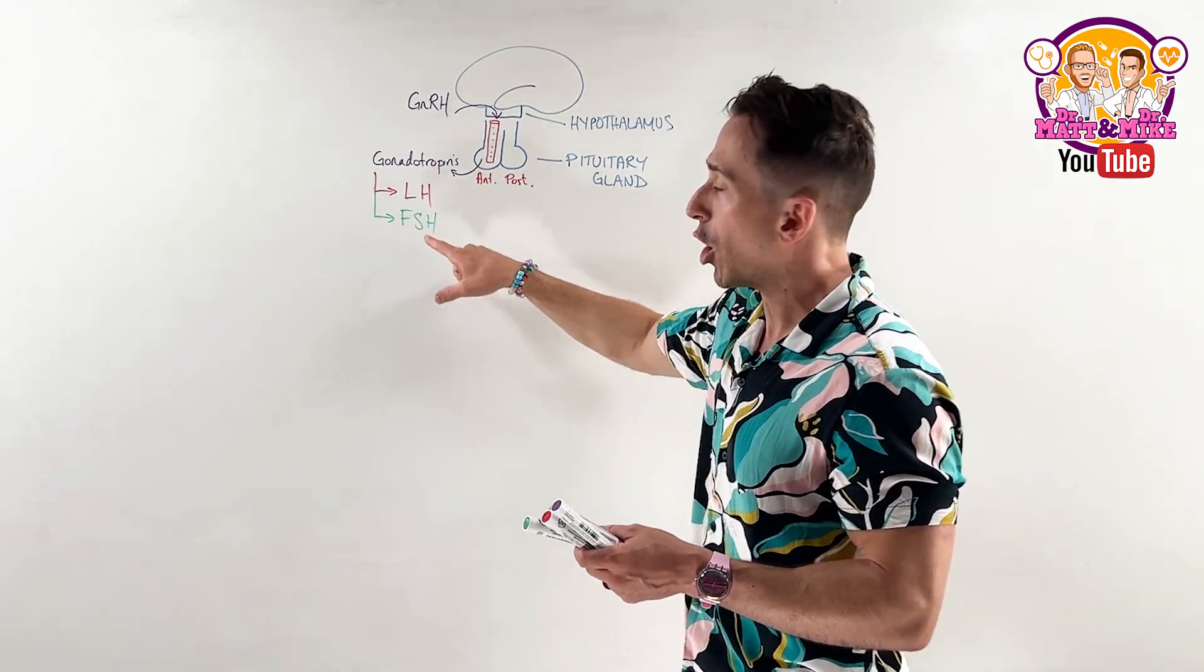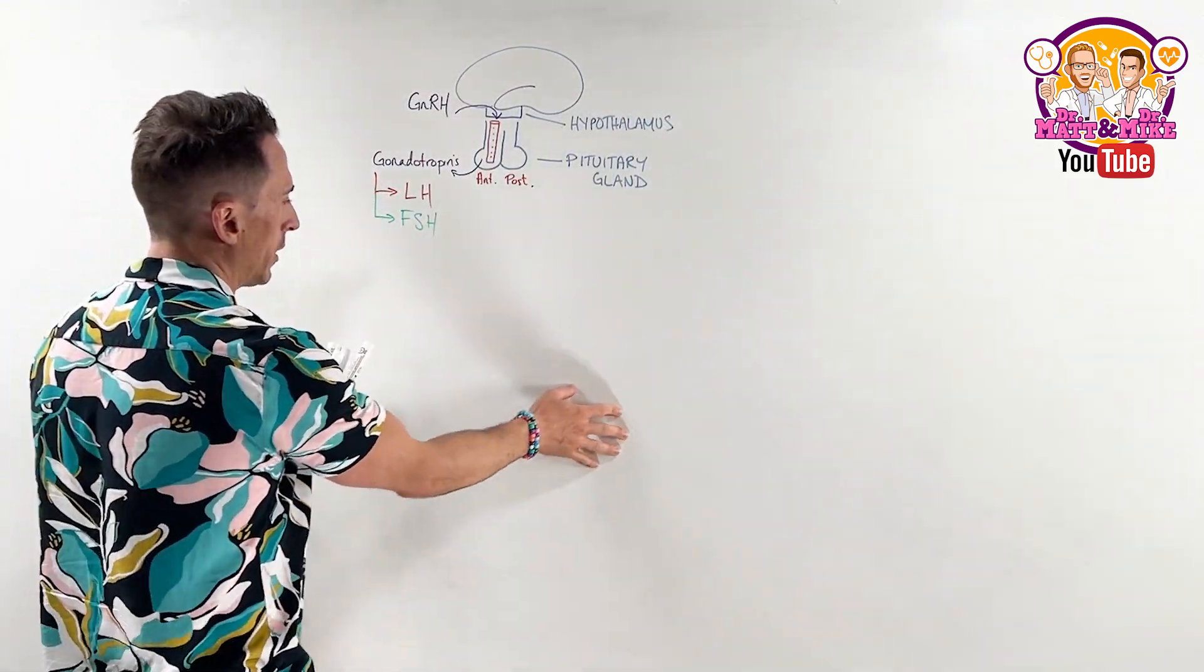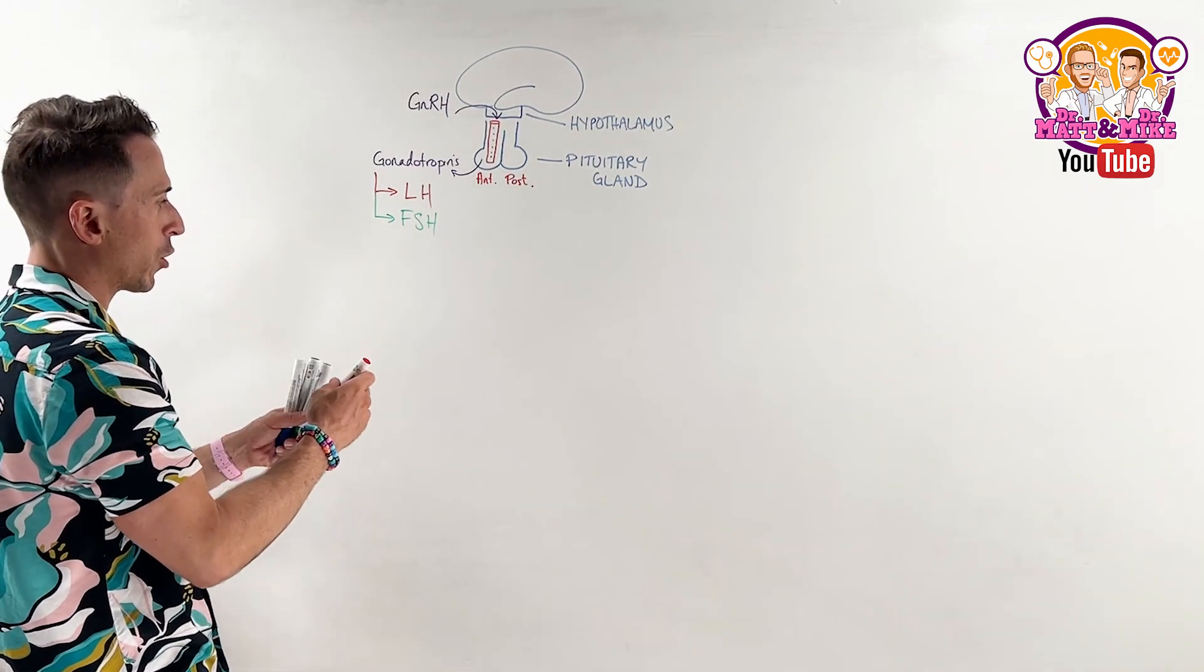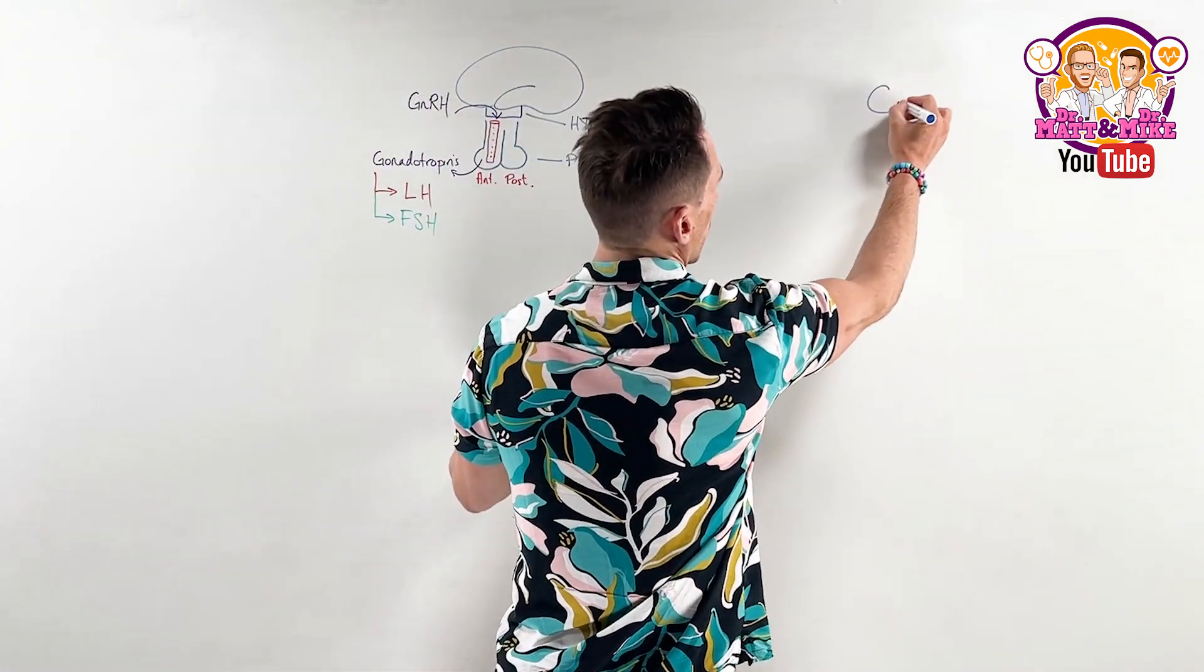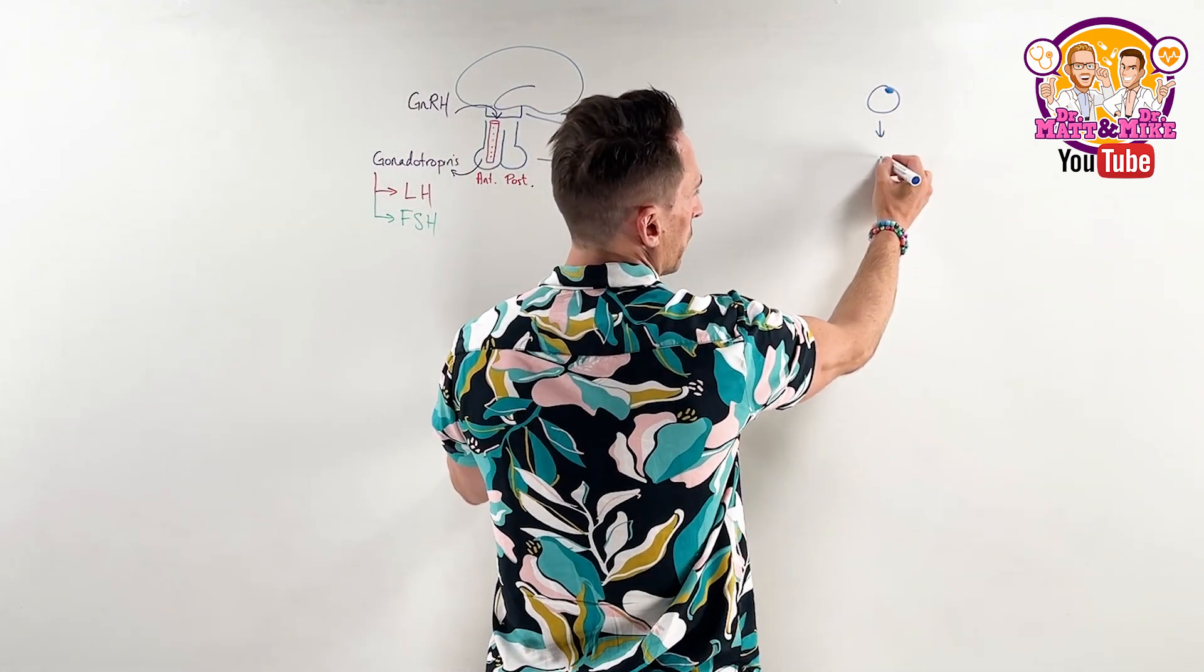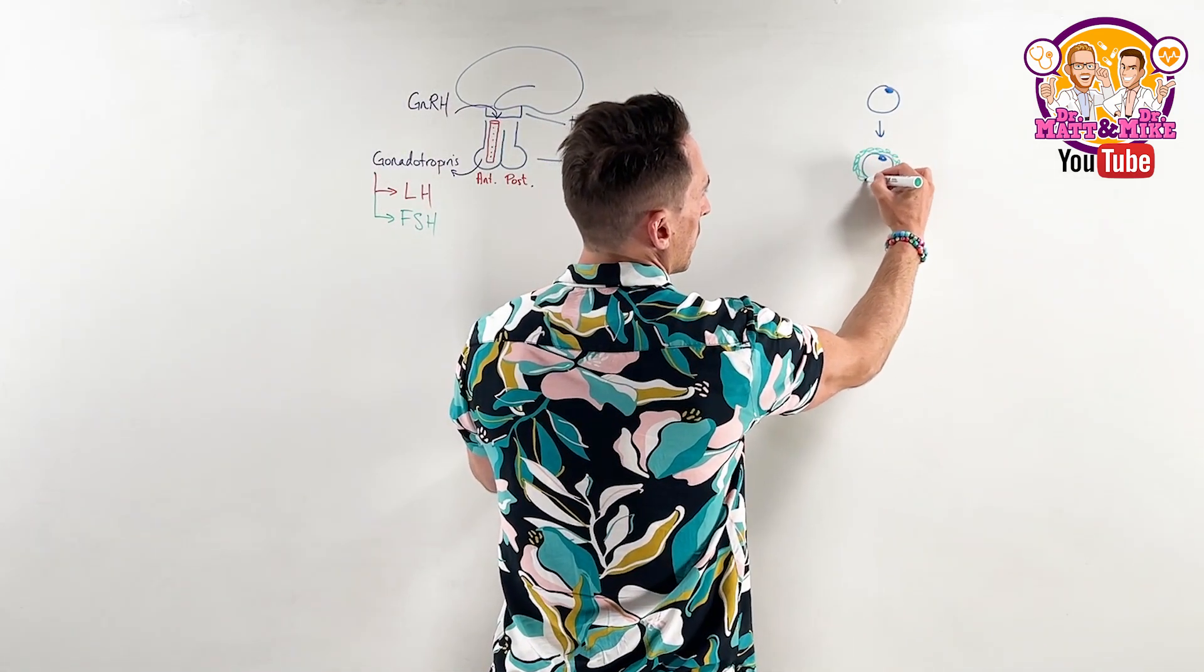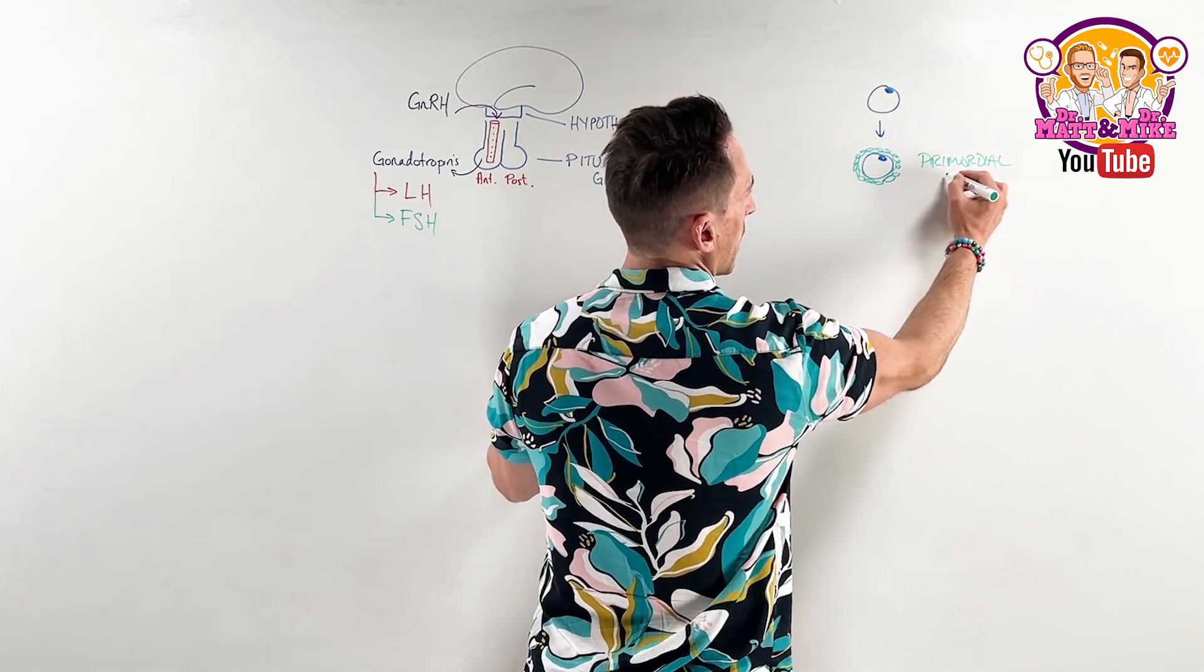Now, they act at the ovary. So we need to draw the ovary up and it's important to know that in the ovary, let's not draw the ovary up actually. Let's draw up two important cell types associated with the ovary. If we were to look at a developing follicle, so let's just say we've got an oocyte or an egg here that as it goes through the developmental phase, that oocyte or egg starts to have cells associated with it.